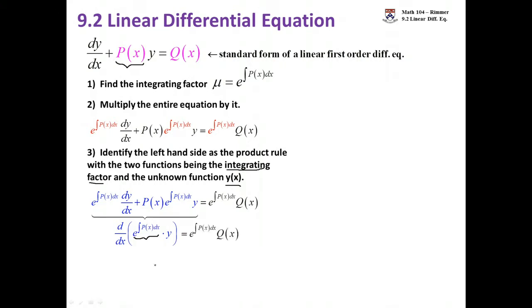If you take a look at it, I have the first times the derivative of the second, and then this happens to be the derivative of the first times the second. It is a product rule. And this function mu is made so that it can make this happen for you.